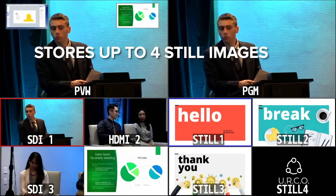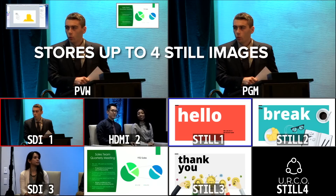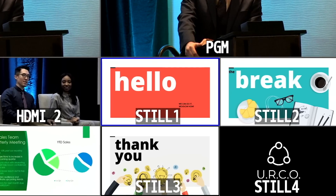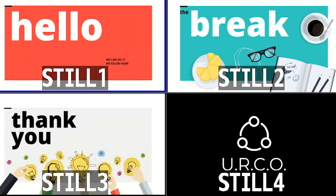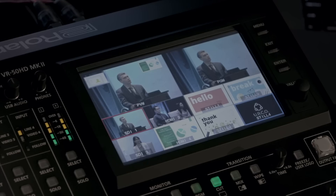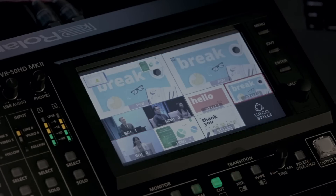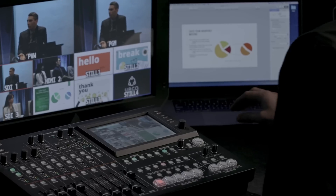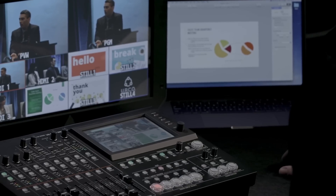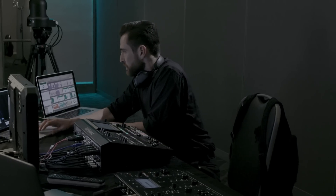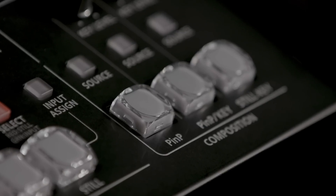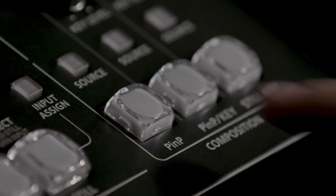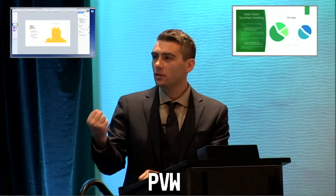The VR50HD Mark II stores up to four still images and displays them on the touchscreen multi-view so they are immediately accessible for breaks, brand, and safety slides. The VR50HD Mark II supports up to four video layers with two resizable PnP windows and downstream keying.